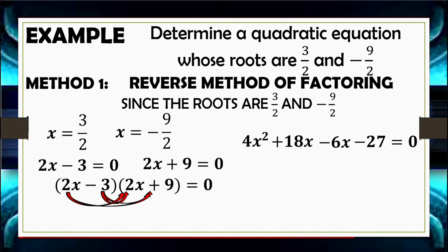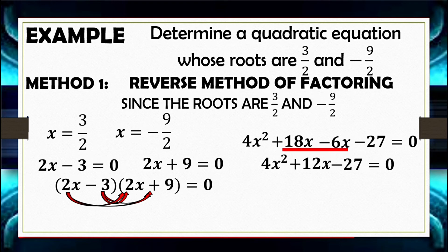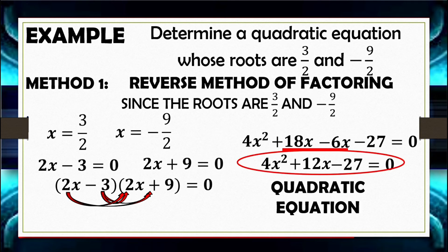Combining the linear terms 18X and negative 6X gives 12X. So the quadratic equation formed when roots are 3 halves and negative 9 halves is 4X squared plus 12X minus 27 equals 0.